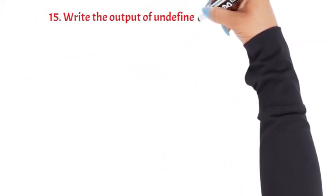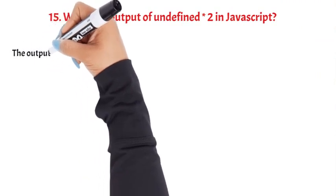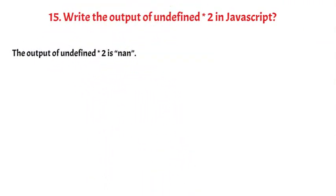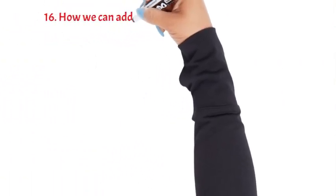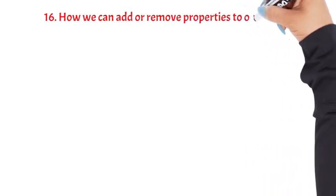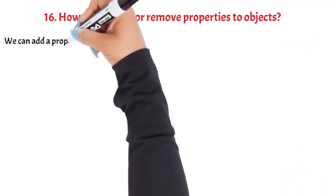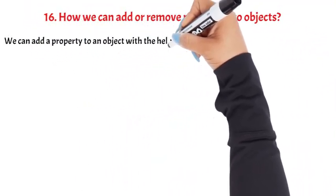Write the output of undefined * 2 in JavaScript. The output of undefined * 2 is NaN. Question 16: How can we add or remove properties to objects?